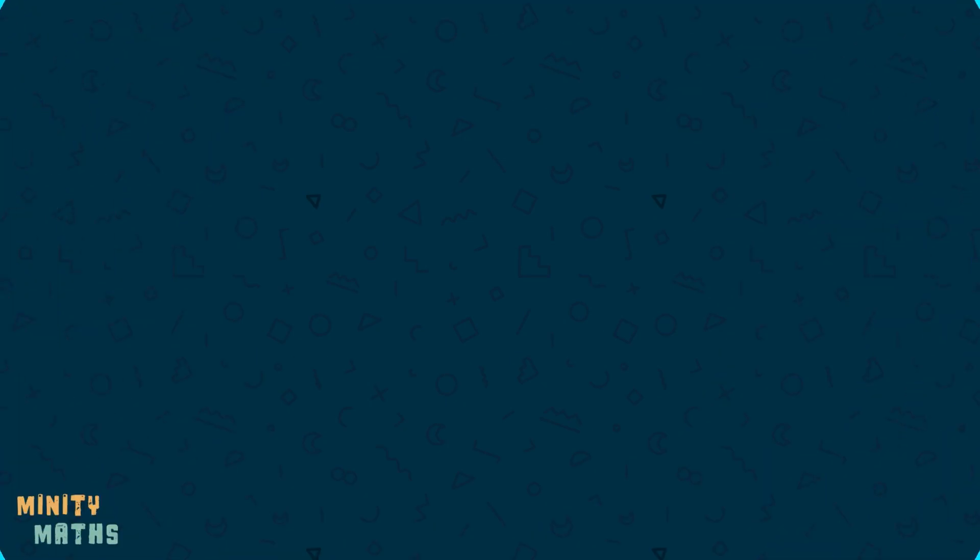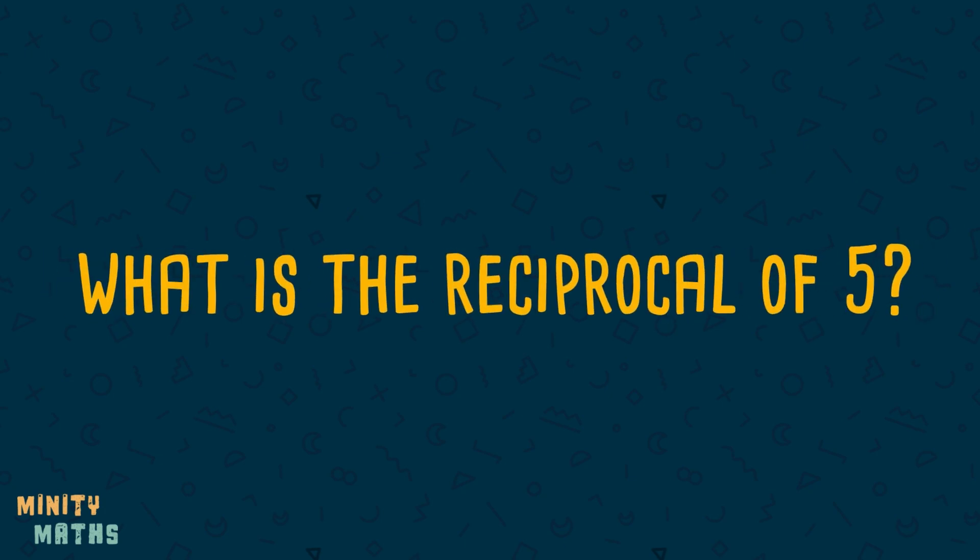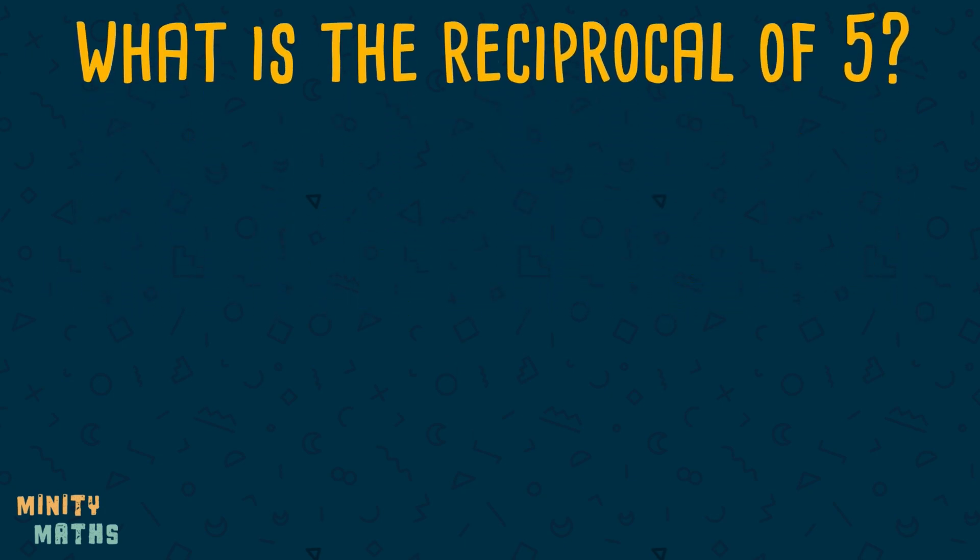You may be asked to find the reciprocal of a number, but what does this mean? Let's look at an example. If we need to find the reciprocal of the number 5, then we need to find the number that we can multiply 5 by to get an answer of 1.